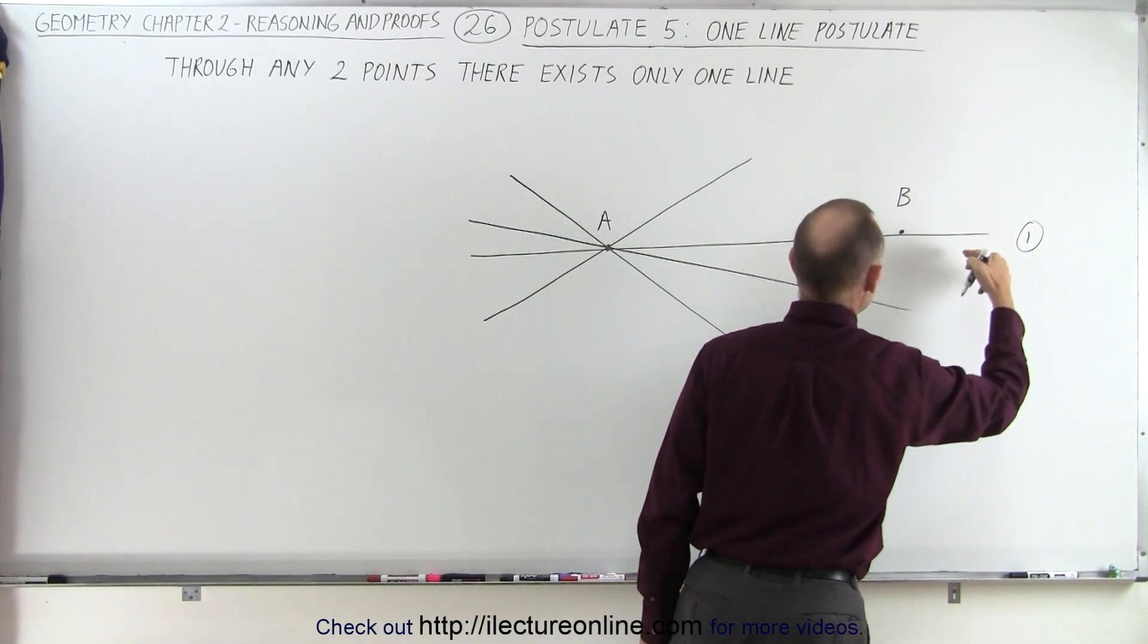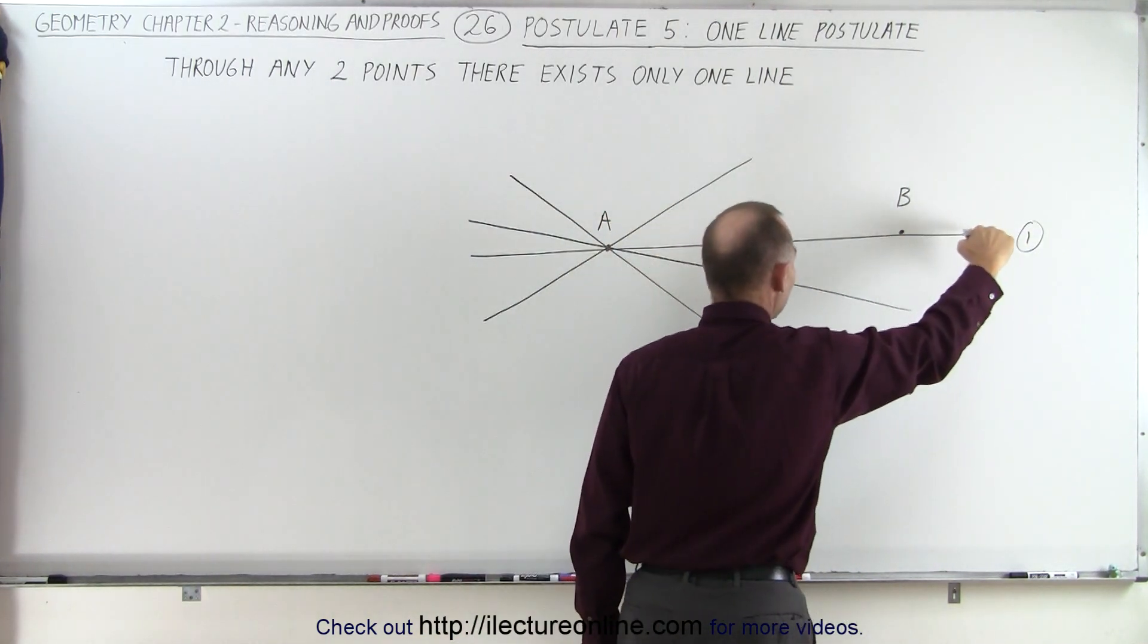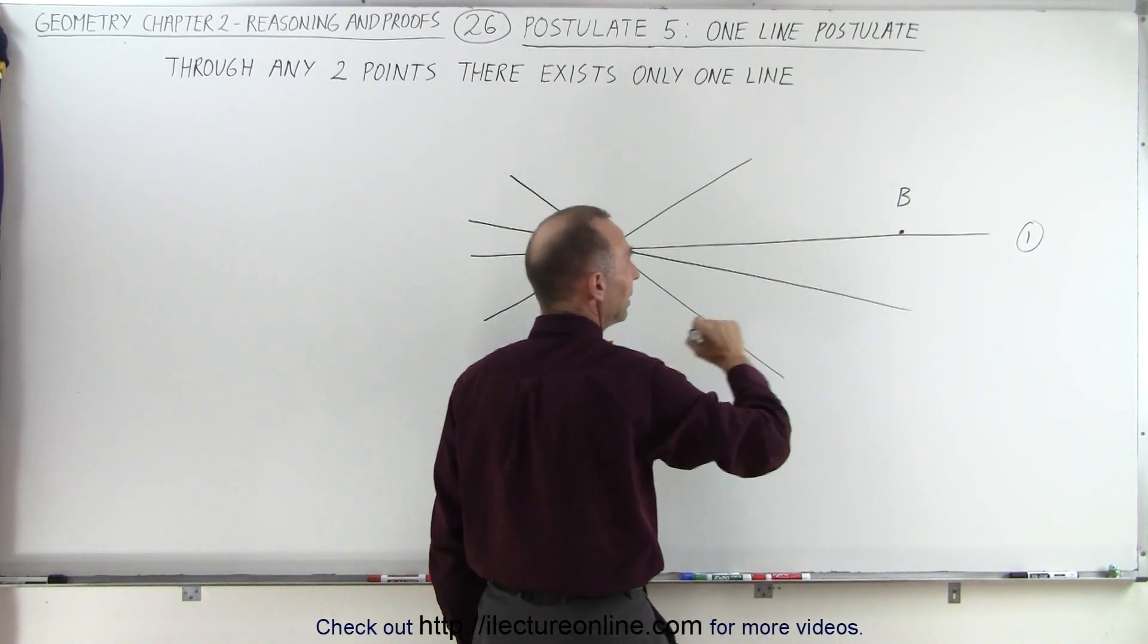And if I start from B and I try to draw a line to A, again the very same line will go through A and B. There's just one line.